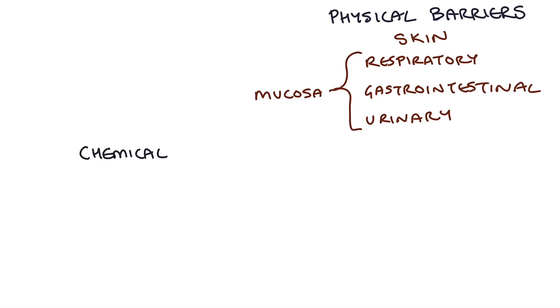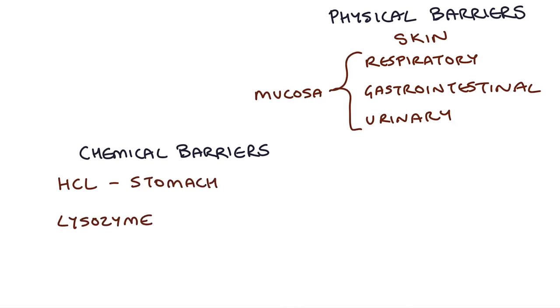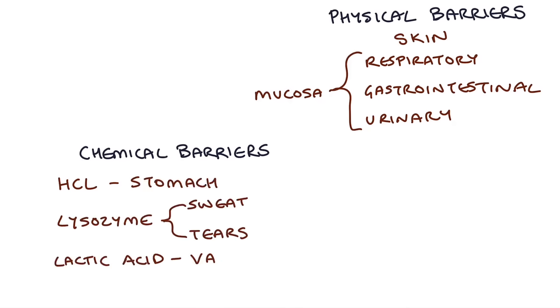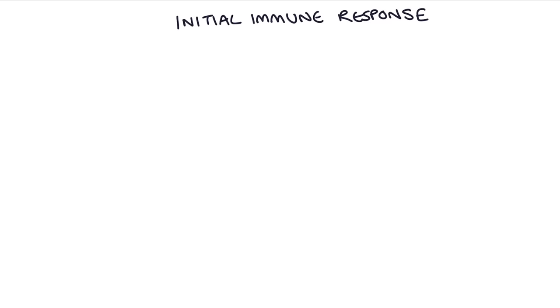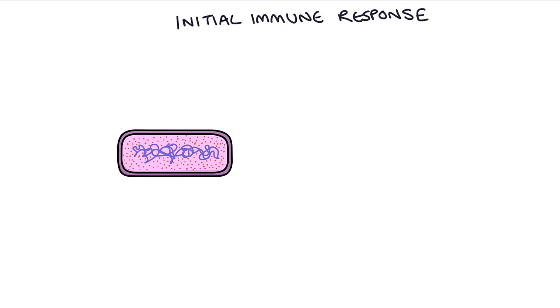There are also chemical barriers that help destroy harmful pathogens before they can cause any infection, such as the hydrochloric acid in the stomach, lysozyme in sweat and tears, and lactic acid in the vagina. Let's look at the initial responses of the immune system once an invading pathogen has broken through the physical and chemical barriers to infection.